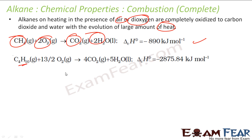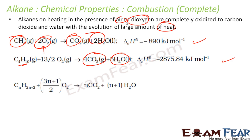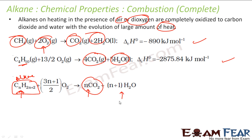You take butane also, you heat it, you get carbon dioxide, water and energy. This is the example of combustion — you heat alkanes in the presence of oxygen, it's complete combustion. The general formula: for alkane CₙH₂ₙ₊₂, you need (3n+1)/2 oxygen to give n CO₂ because Cₙ gives n carbon dioxide and (n+1) molecules of water.